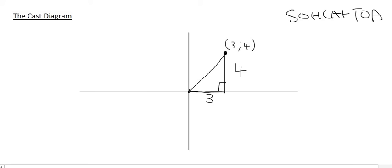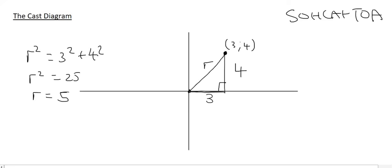We'll call the hypotenuse R, so R squared equals 3 squared plus 4 squared, giving R squared equals 25, which means R equals 5 when you take the square root.